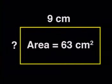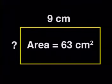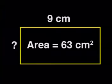Let's start by going through some examples of division together. As in the previous lesson, we are going to be using our knowledge of the area of a rectangle as a useful tool to help us. Here is the first example of division. The area of a rectangle is 63 cm squared. One side is 9 cm long. What is the length of the other side?